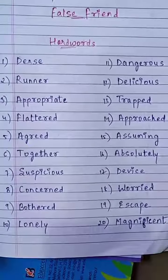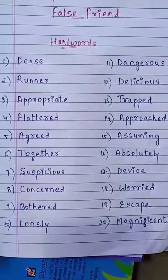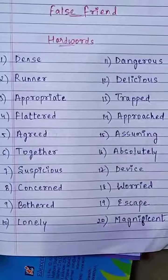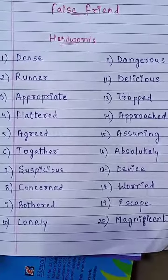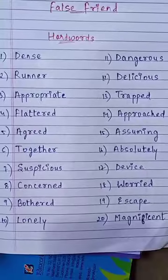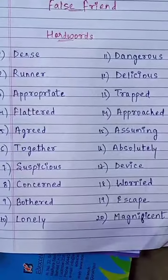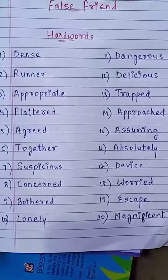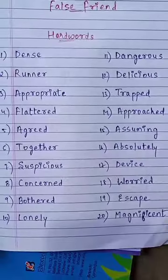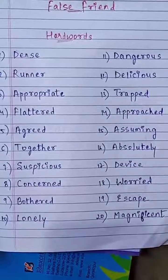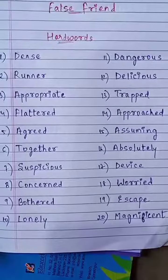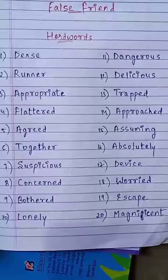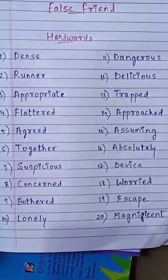Sixth, together, t-o-g-e-t-h-e-r, together. Seventh one, suspicious, s-u-s-p-i-c-i-o-u-s, suspicious. Eighth one, concerned, c-o-n-c-e-r-n-e-d, concerned. Ninth, bothered, b-o-t-h-e-r-e-d, bothered. Tenth, lonely, l-o-n-e-l-y, lonely.